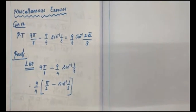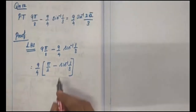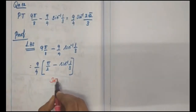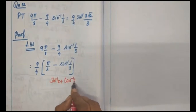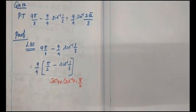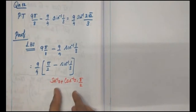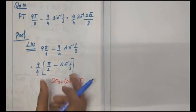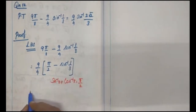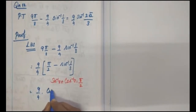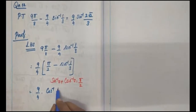We know the property: sin⁻¹(x) plus cos⁻¹(x) equals π/2. Using this property, π/2 minus sin⁻¹(1/3) is equal to cos⁻¹(1/3). So we can substitute cos⁻¹(1/3) in place of that expression.